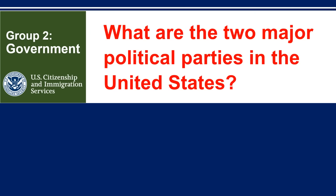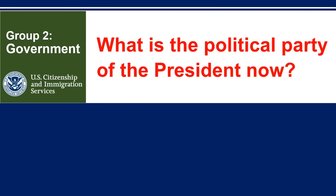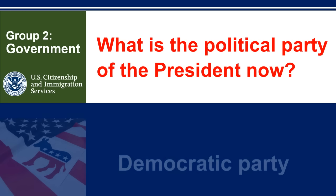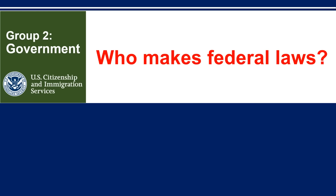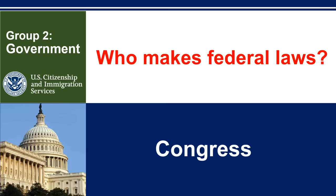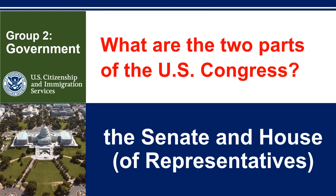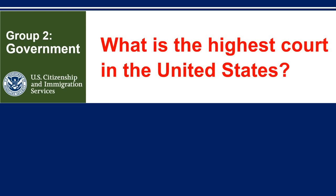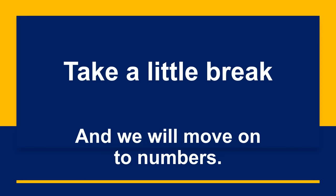What are the two major political parties in the United States? Democratic and Republican. What is the political party of the President now? Democratic Party. Who makes federal laws? Congress. What are the two parts of the U.S. Congress? The Senate and House of Representatives. What is the highest court in the United States? The Supreme Court.